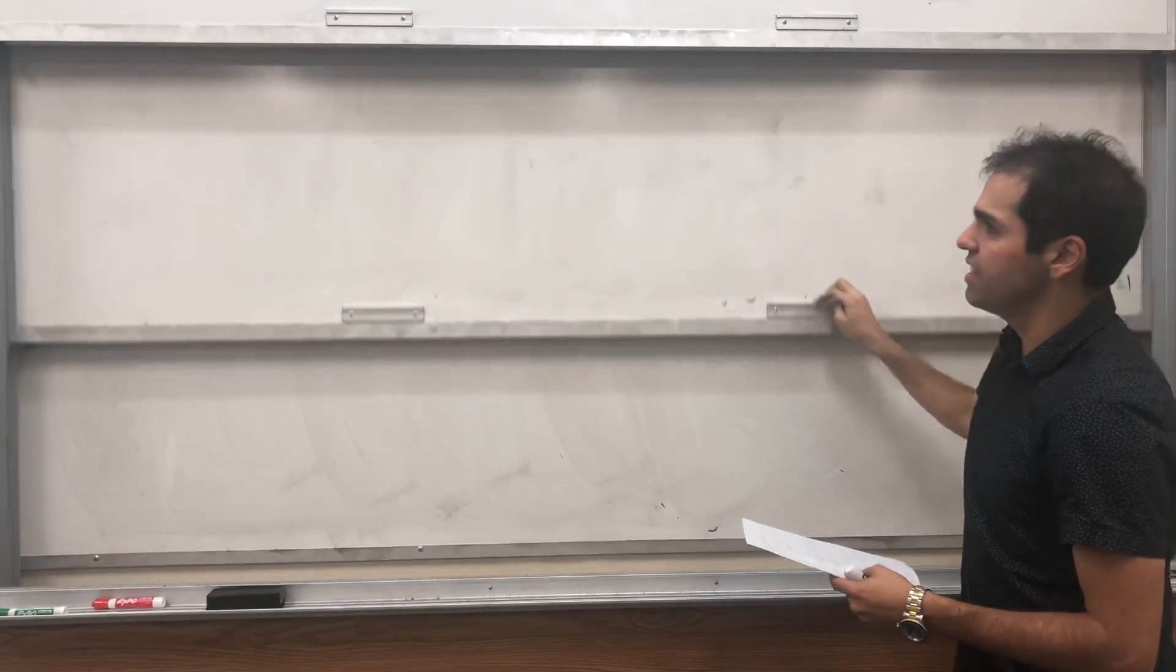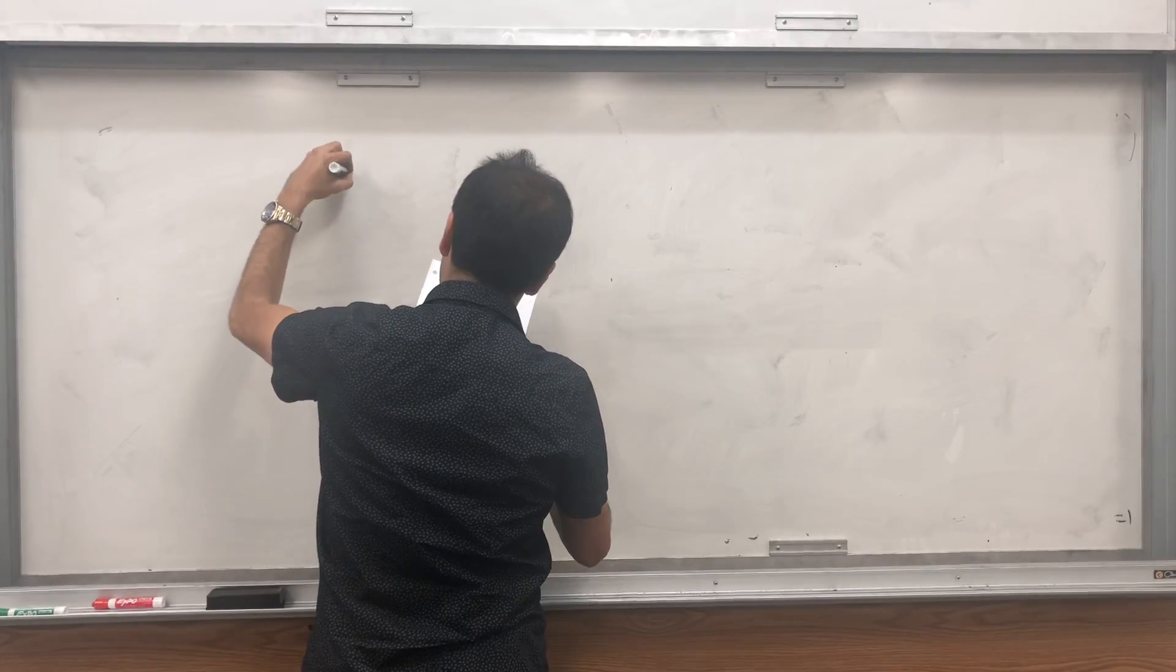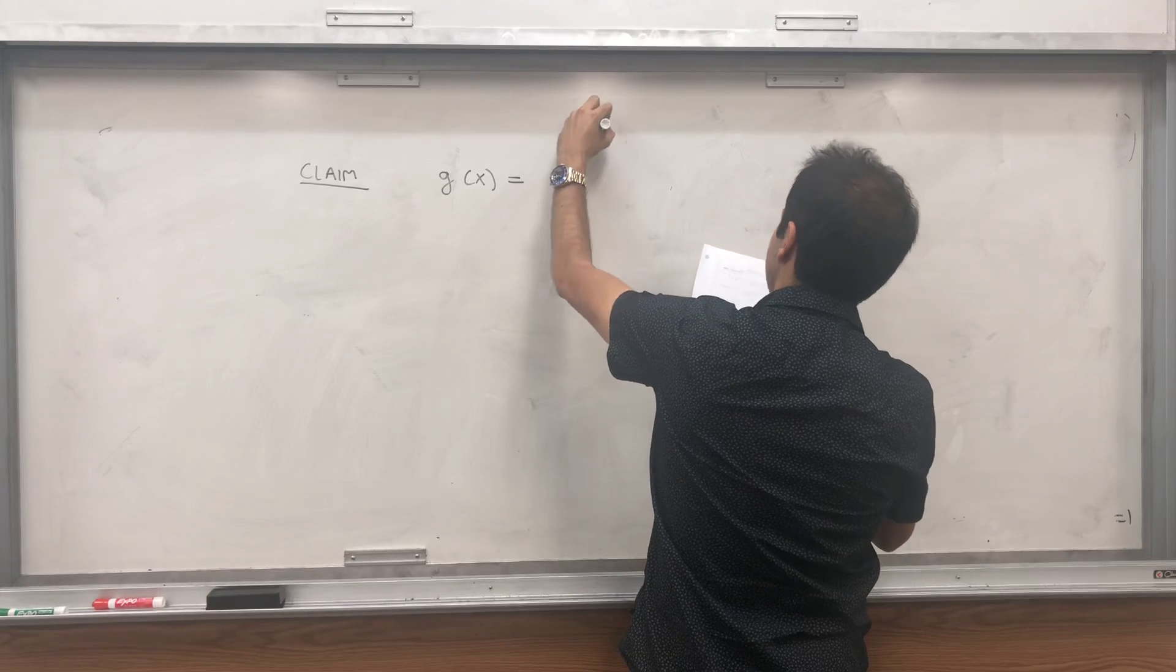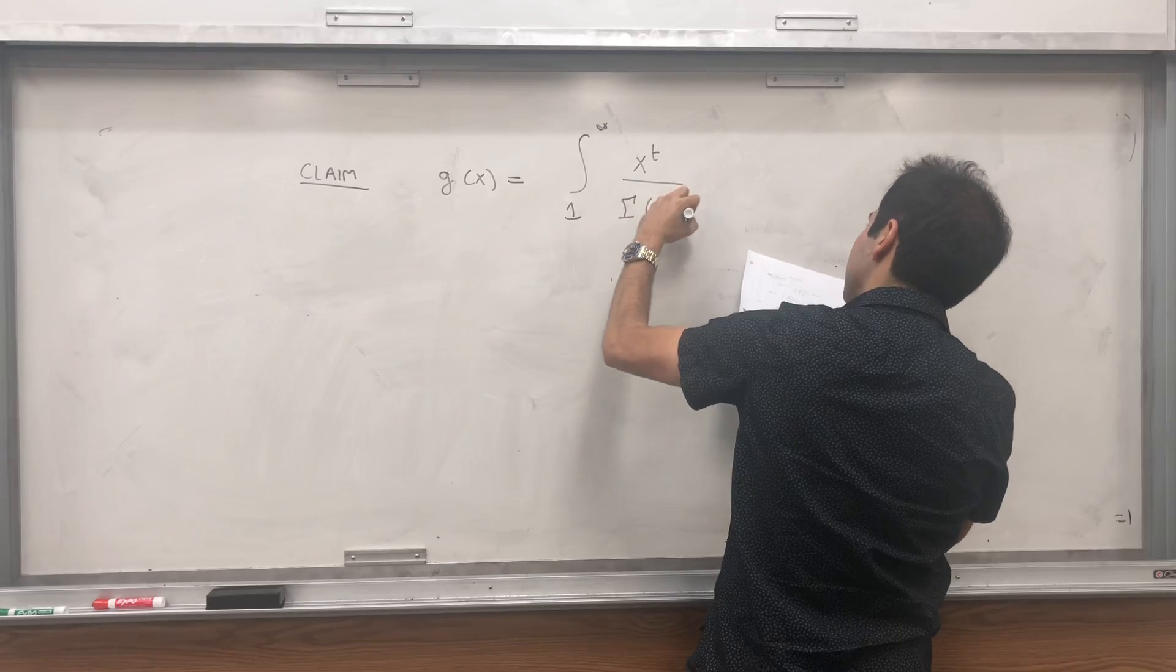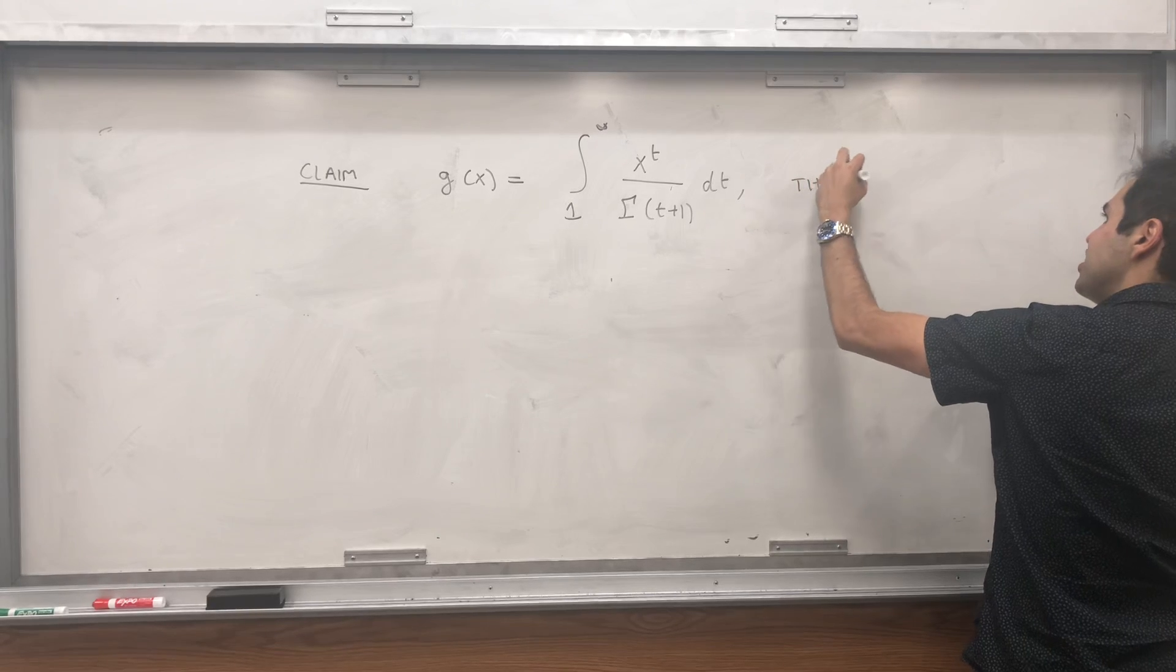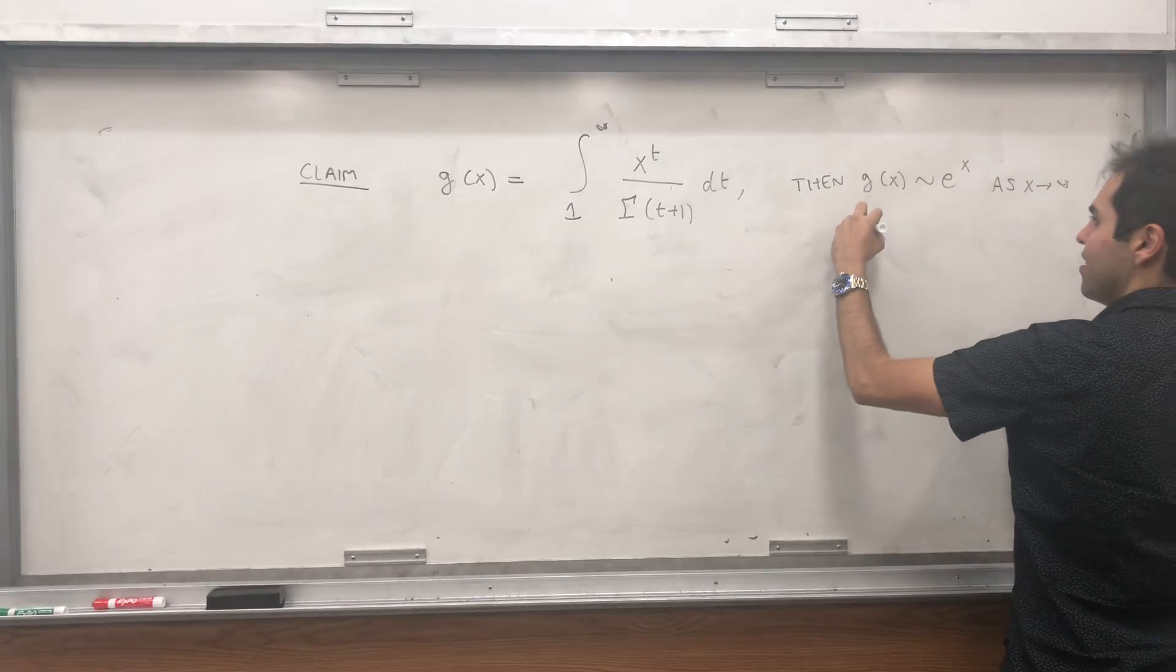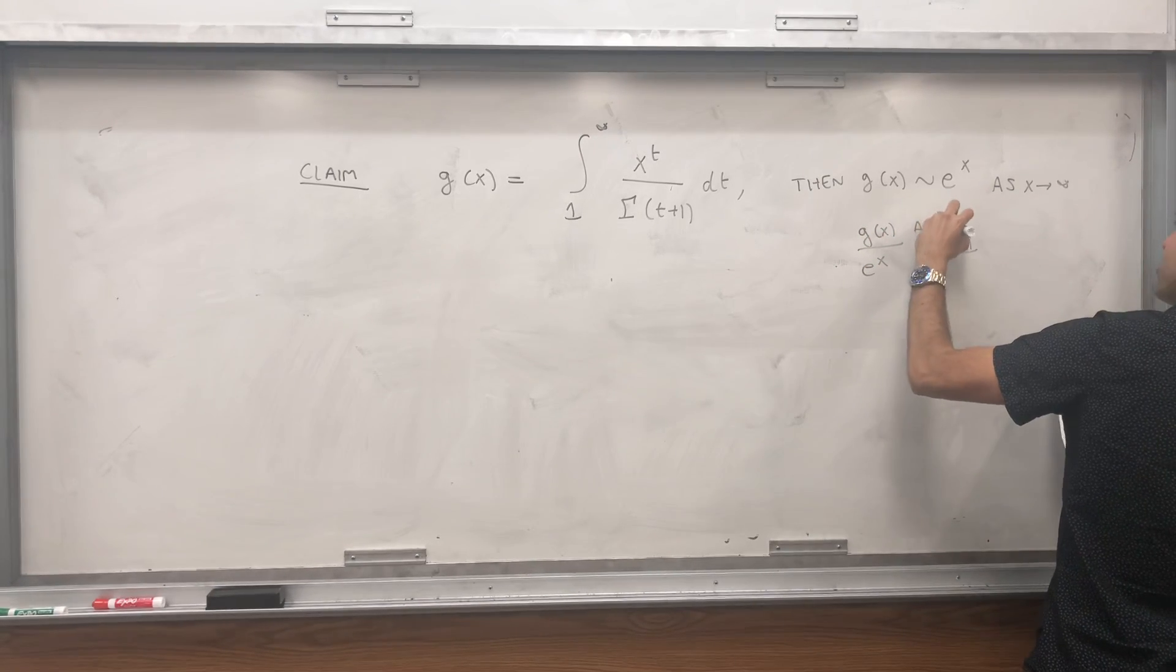So claim, suppose you take the integral, but just from 1 to infinity. Let g of x be the following integral. Not the integral from 0 to infinity, but the integral from 1 to infinity of this. x to the t over gamma of t plus 1 dt. Then, I'm claiming that g of x is asymptotically equal to e to the x as x goes to infinity. Which really means g of x over e to the x goes to 1 as x goes to infinity.